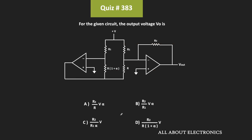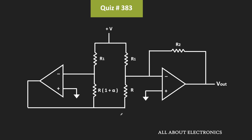Welcome to the YouTube channel all about electronics. In this question, for the given op-amp circuit we have been asked to find the output voltage. Let me just redraw the same circuit so that it becomes easy to find the output voltage. Here this is op-amp number one and this is op-amp number two. This resistor R1 is connected at the inverting terminal of the first op-amp, and the other end is connected to the plus V voltage. This resistor is the feedback resistor between the output and the inverting terminal.